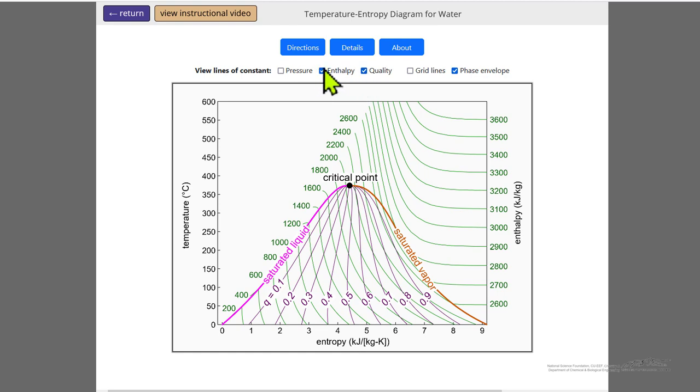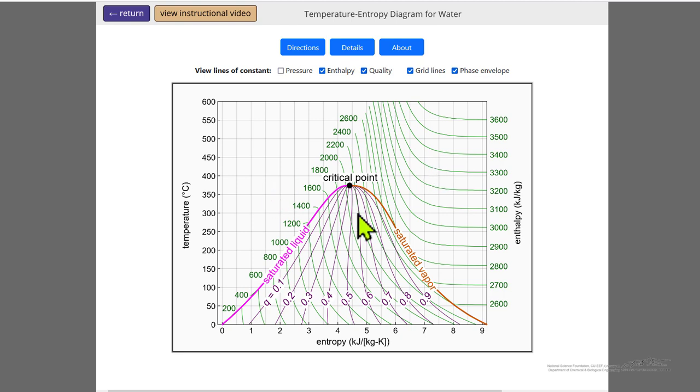Finally, we can look at quality, constant quality lines. It's the fraction that's vapor. We can also show grid lines to make it a little easier to read off a value.